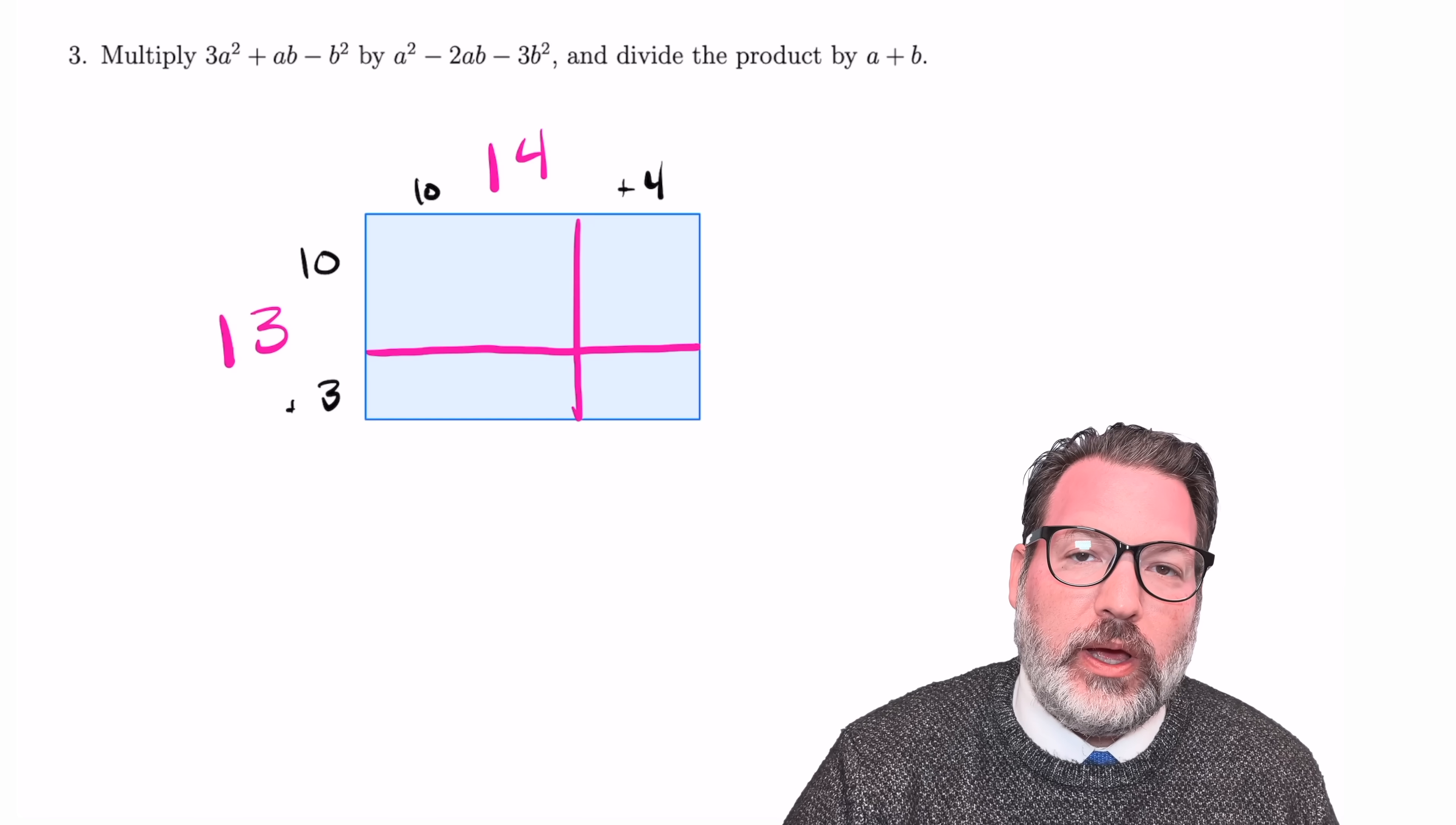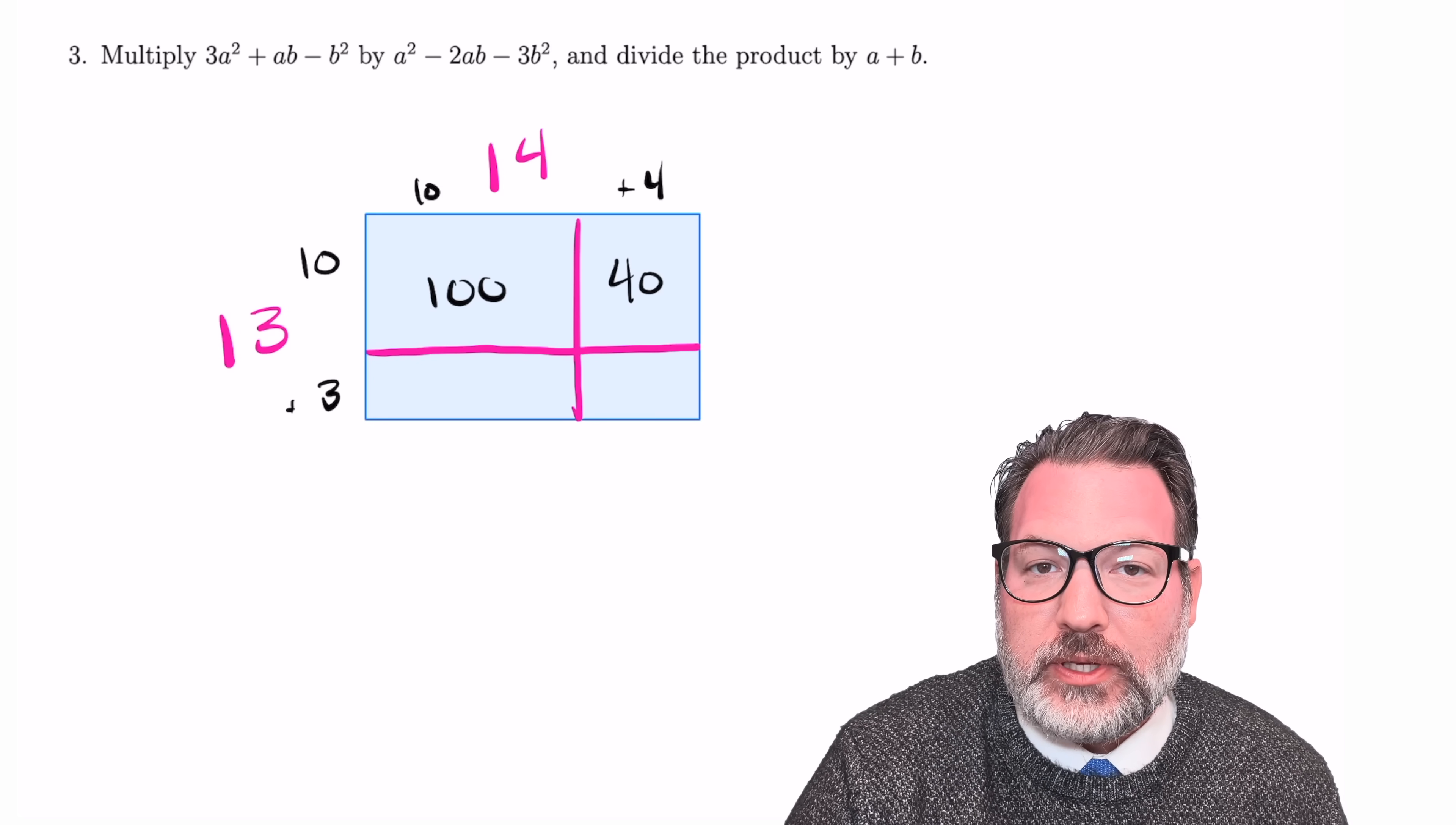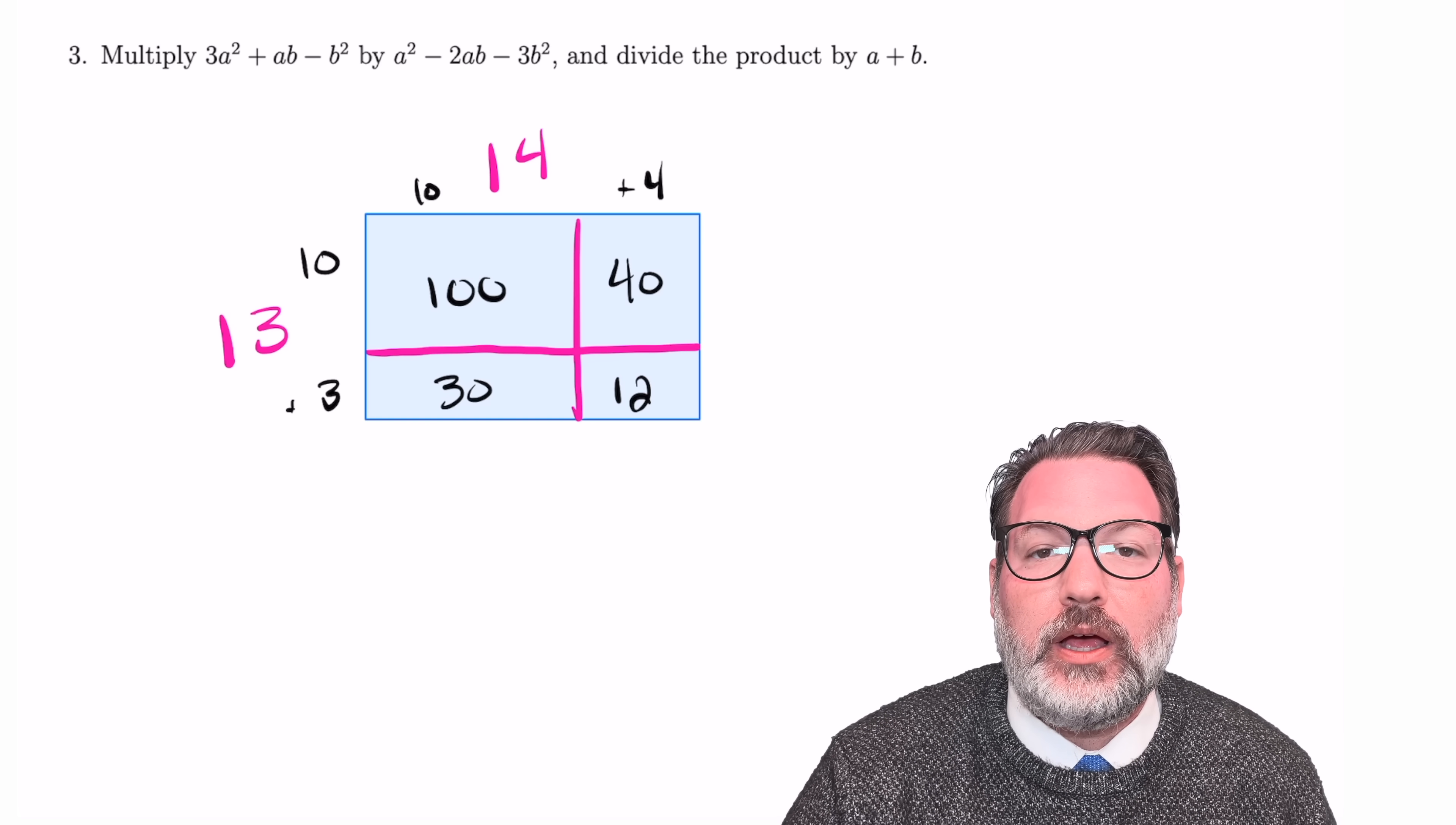Now, once we write it this way, we can come up with some partial products using this area model. 10 times 10 is 100. 10 times 4 is 40. So we're thinking of each of these boxes as separate rectangles where we're just using the dimensions to come up with their area. 10 by 3 as a rectangle has an area of 30. And then finally, we do have our original 3 by 4 rectangle here coming from multiplying those 1s digits, which of course is going to give us back an area of 12.